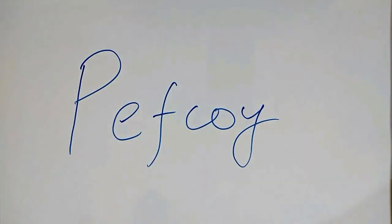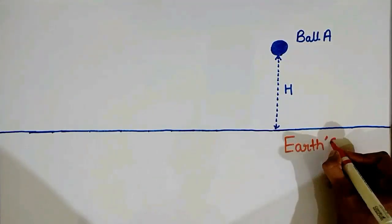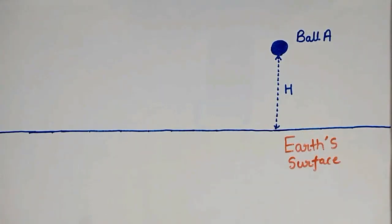Hello guys, welcome to Pepcoi. Suppose a ball named A is at a height h from the earth's surface. Now suppose this ball is dropped with zero initial velocity.